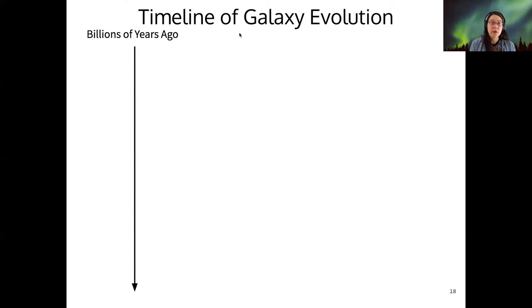We're going to create a rough timeline of galaxy evolution, not to scale on this arrow of time. Our scale is billions of years ago. The earliest event on our timeline is 13.8 billion years ago when the universe starts expanding. We'll talk about that in more detail in the section on cosmology.